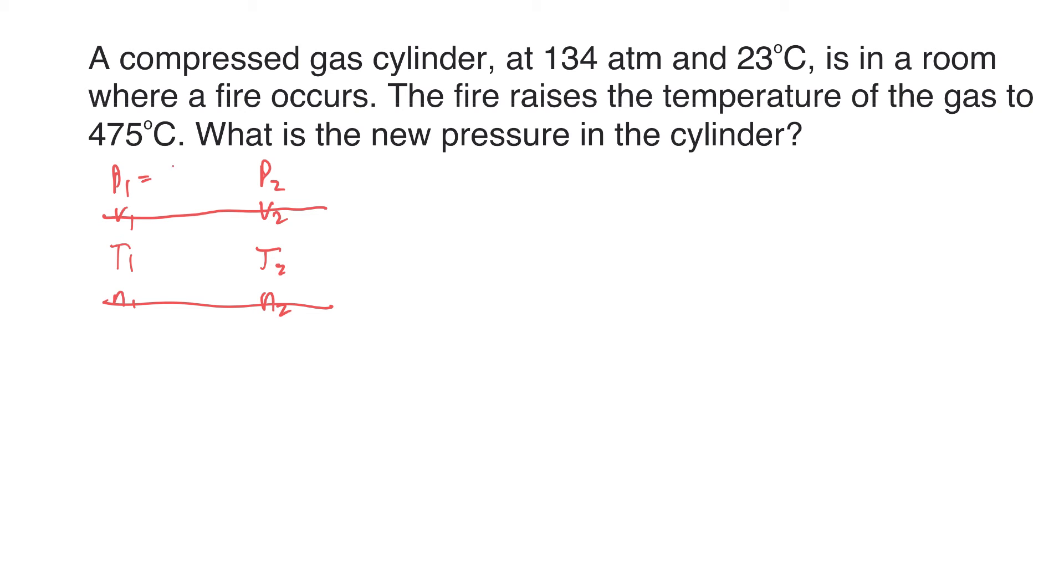So I've got this thing at 134 atmosphere pressure, and it's at 23 Celsius. 273.15 plus 23, 296.15 Kelvin. So P2, that's what I'm looking for, and the temperature goes to 475. I've got to add that one up too. 475 plus 273.15, so this would be 748.15 Kelvin. So P2 and T2, is that one of our formulas?